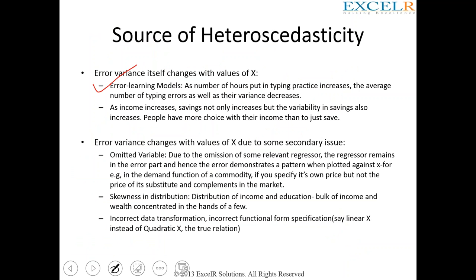These are various reasons why heteroscedasticity might exist. Error learning models: as the number of hours spent typing and practicing increases, the number of errors comes down as well as the variance decreases. Earlier you might have taken one hour to type one page; now you take only two minutes. As your experience increases, more or less you take the same time for any document, so the variance also decreases and your errors also reduce.